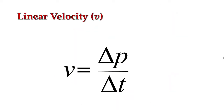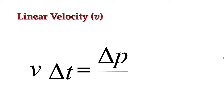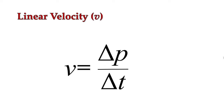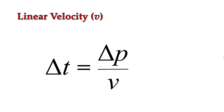Now let's talk about velocity. Remember, velocity was how fast you were going in a particular direction. Mathematically, it was displacement divided by the change in time, or the change in position divided by the change in time. We can manipulate this equation to determine the final displacement by taking velocity multiplied by the change in time. We can also rearrange to find that the change in time equals the displacement divided by velocity.